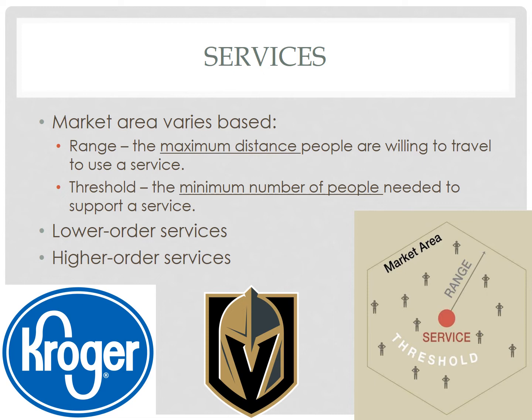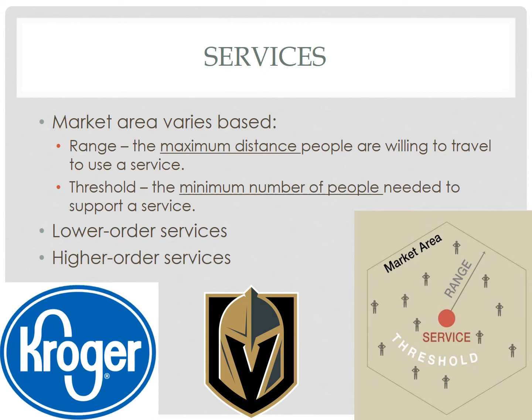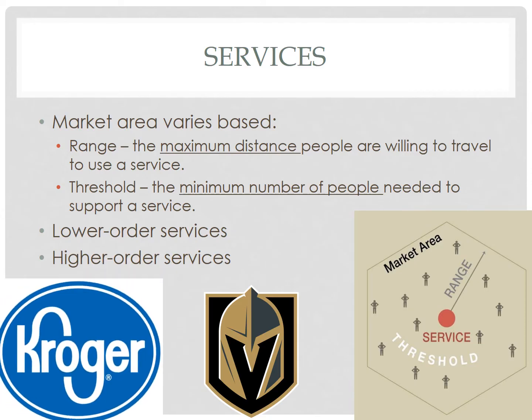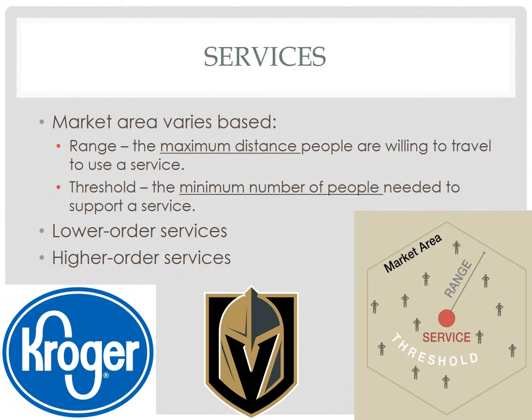These settlements will only have services that have lower ranges and thresholds — we call these lower order services. These are going to be services like grocery stores, gas stations, barbershops, and post offices. Lower order services are the ones that meet people's everyday needs.